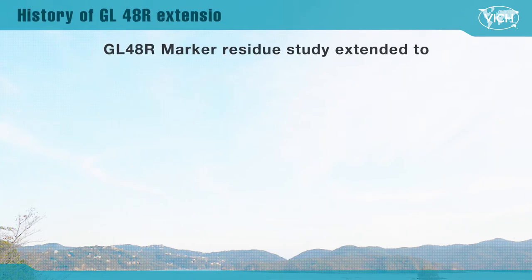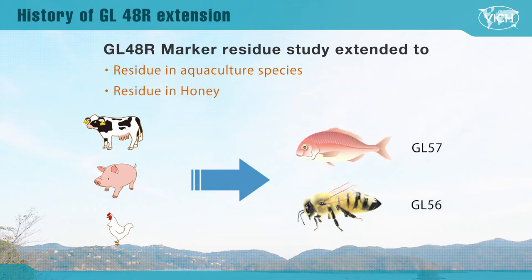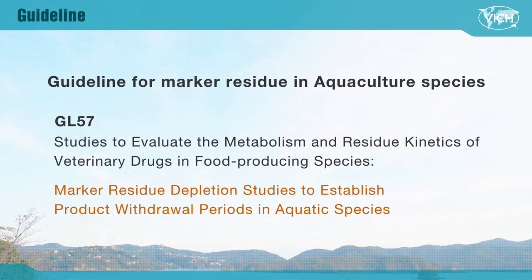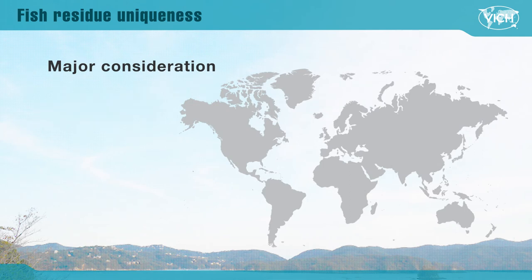The GL48R study was originally created to define the marker residue level in terrestrial food animals. However, since there are various differences between major food animal species and fish and honeybees, it was decided to create other guidelines for fish and honeybees. To develop this guideline, major consideration was made for the uniqueness of fish, including temperature difference and salinity difference. Fish metabolism and residue differ depending on water temperature.